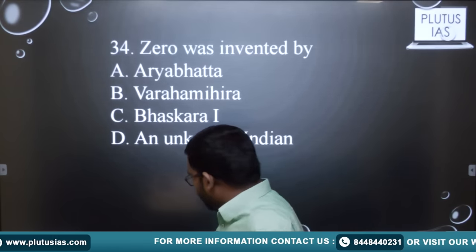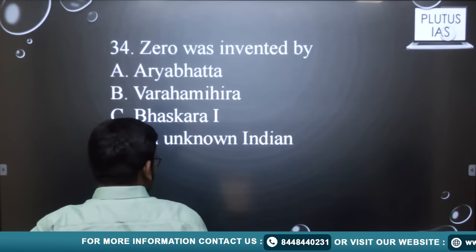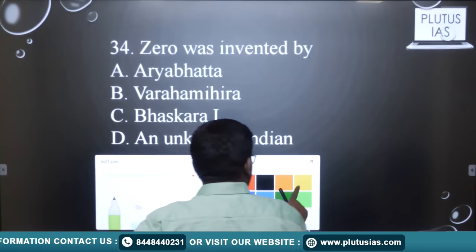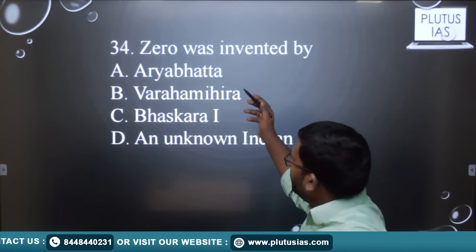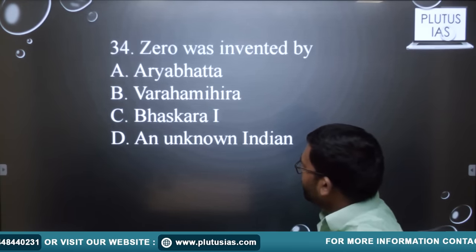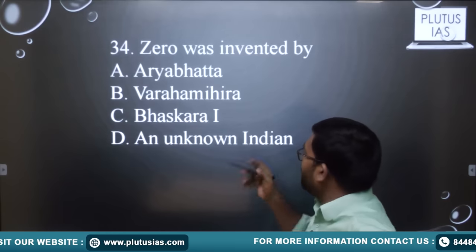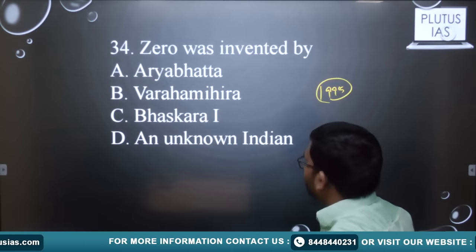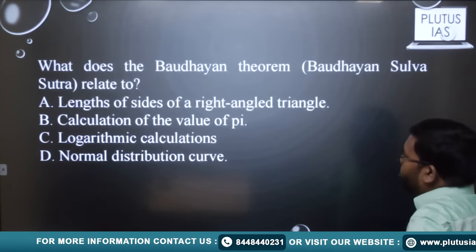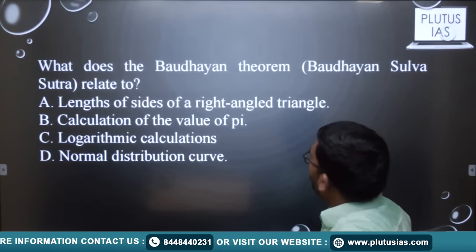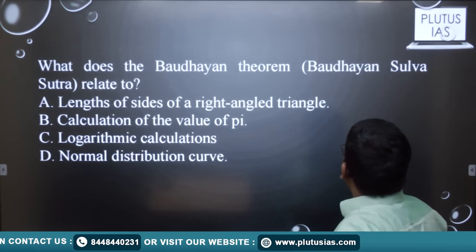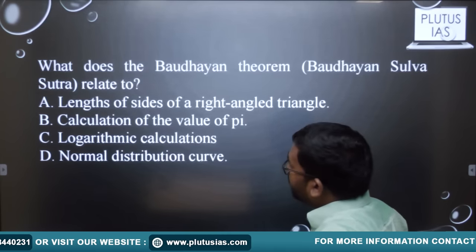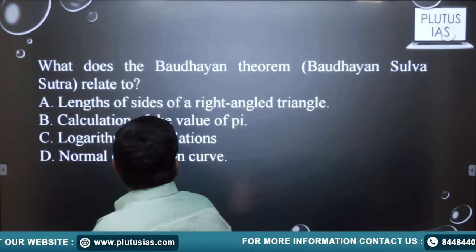One question which was asked was: 'Zero was invented by...' — so who invented zero? Was it Brahmagupta, Bhaskar, Aryabhata, or unknown India? This was asked in the 1995 civil service prelims. The second question is: what does the Baudhayana theorem — that is the Baudhayana Sulva Sutra — relate to?